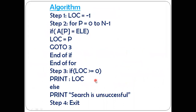Now we'll study the algorithm. Step one: location is initialized to minus one. Location is a variable initialized as minus one because array indexing starts with the zeroth element. Step two: for p equals zero to n minus one. For example, if n is five, then five minus one is four, so p goes from zero to four. Every time the for loop executes, p increases by plus one.